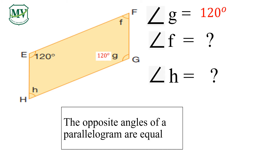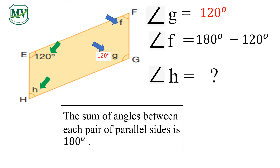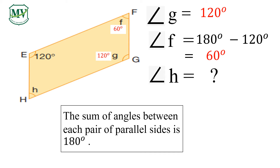Do you have an idea how to solve angle F and angle H? Let's recall another property of a parallelogram: the sum of angles between each pair of parallel sides is 180 degrees. So 180 degrees minus 120 degrees is equal to 60 degrees. Angle H is equal to angle F, and that is 60 degrees.